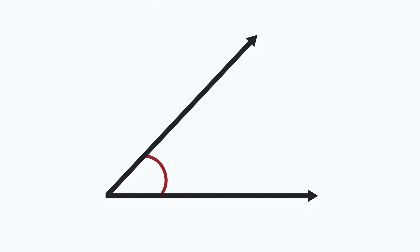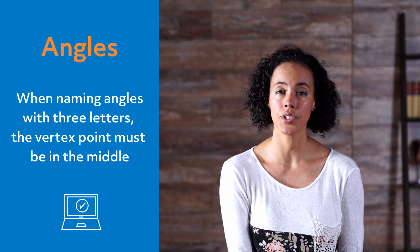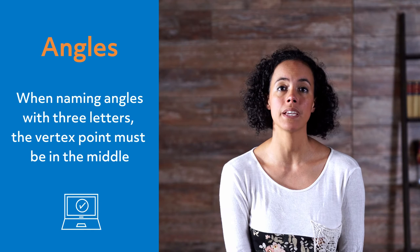Sometimes we have many angles, so in order to tell them apart, we have a system for naming them. Here's our simple angle again, but with a few points added on the rays. Now we can refer to our angle as angle ABC. When naming angles with three letters, the vertex point must be in the middle.